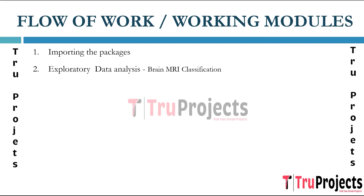The next step is exploring the dataset. This phase involves analyzing the brain MRI classification dataset. Two types of classifications are considered: binary, which distinguishes between benign and malignant, and multiclass, which categorizes into specific tumor types — pituitary, meningioma, and glioma. Before diving into the main task, an exploratory analysis of the dataset is performed, examining the structure and characteristics of the brain MRI data to gain insights into its distribution, potential outliers, and general patterns.